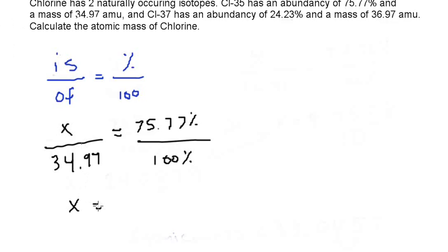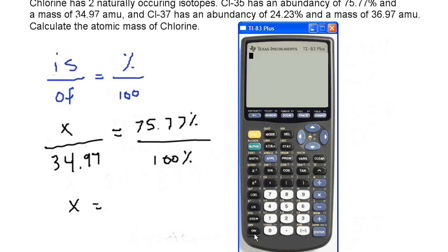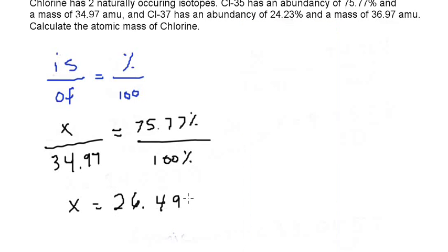Now all we have to do is plug this in the calculator and see what it gives us. This is a proportion. You're going to cross multiply first. So you're going to multiply 34.97 by 75.77. And then after you finish multiplying these two numbers across, you're going to divide by 100%. And you're going to get 26.496.